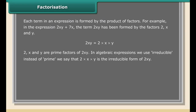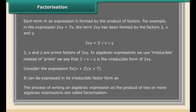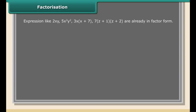We say that 2 × x × y is the irreducible form of 2xy. Consider the expression 5x(x + 2)(x + 7); it can be expressed in its irreducible factor form. The process of writing an algebraic expression as the product of two or more algebraic expressions is called factorization. Expressions like 2xy, 5x²y², 3x(x+7), and 7(z+1)(z+1)(z+2) are already in factor form. To find the factors of expressions like 2x²+4x or x²+6x+8, we need to follow systematic methods — the method of common factors.